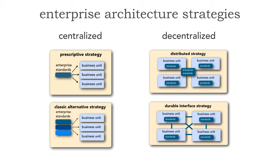I'm going to introduce two different case studies. When I introduce the case study, we'll read it together and then I'd like you to hit pause. Go back to each of the lessons: number 63 for prescriptive, 64 for the classic alternatives, 65 for distributed, and 66 for the durable interface. Take a look at the characteristics, the pros and cons, and then hit play to see the answer. I'd like all of you listening to be able to select which enterprise architecture strategy would be best suited for each particular case study.